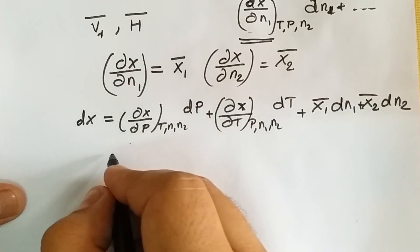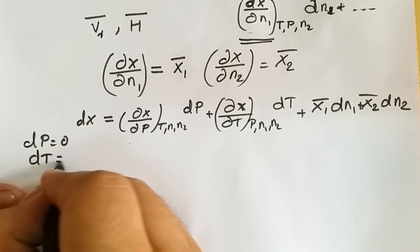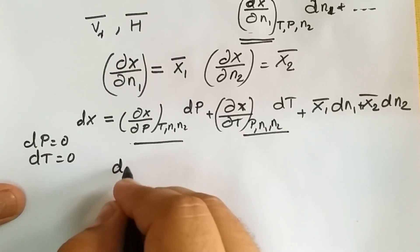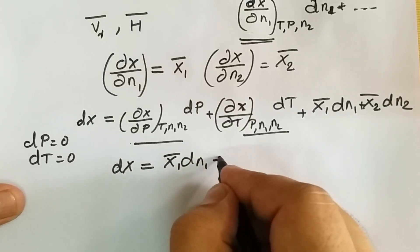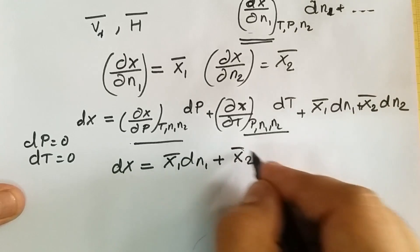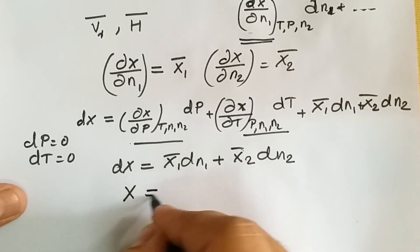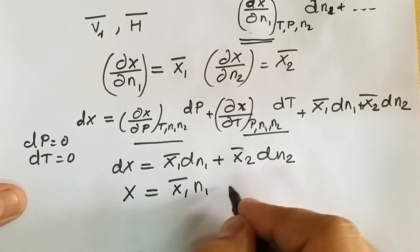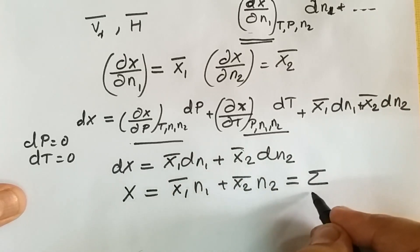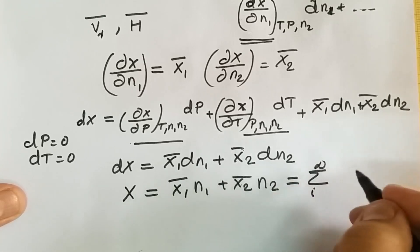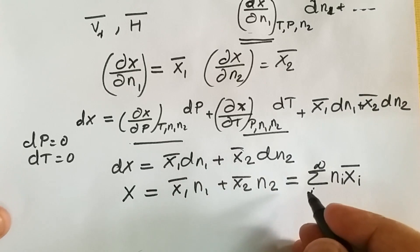If our system is at constant temperature and constant pressure — that is, isobaric and isothermal — then dP = 0 and dT = 0, so both those terms vanish. Hence I can write: dX = x̄₁·dn₁ + x̄₂·dn₂. Integrating this equation gives: X = x̄₁·n₁ + x̄₂·n₂.